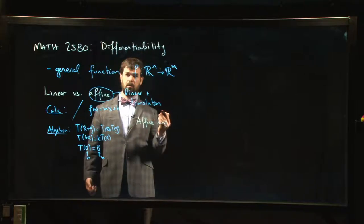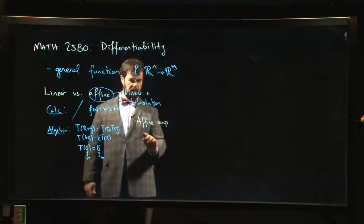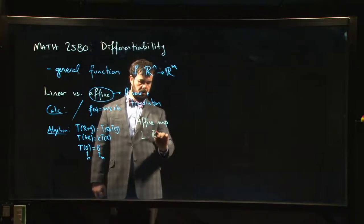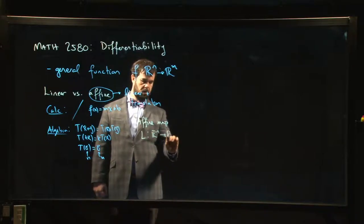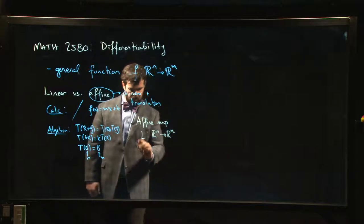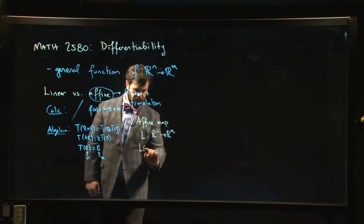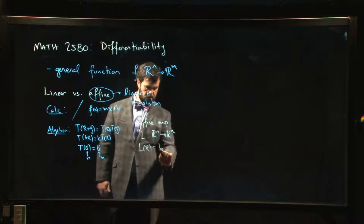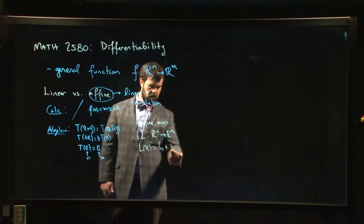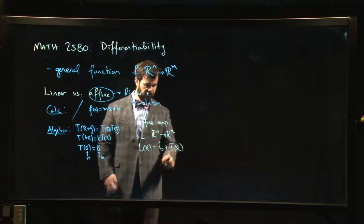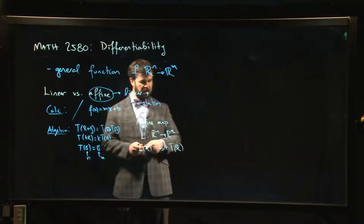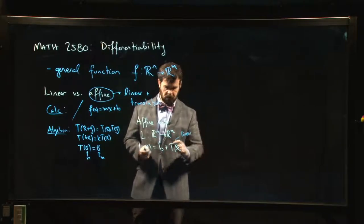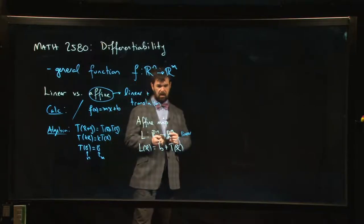A general affine transformation, maybe we'll call it L, going from R^n to R^m, is going to look like L(x) equals